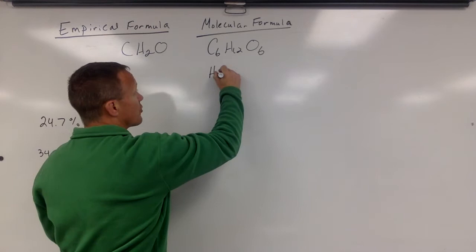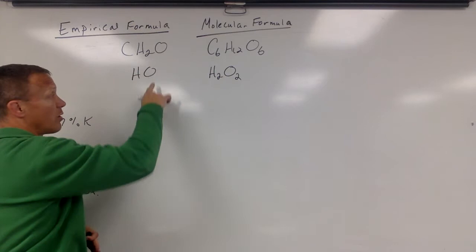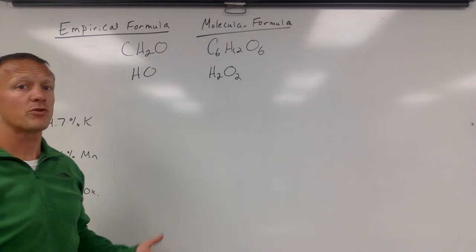For example, hydrogen peroxide is H2O2. Its most reduced ratio is just HO, it's a 1:1 ratio. Even though there's no compound that has this actual formula, that is the most reduced ratio of that.